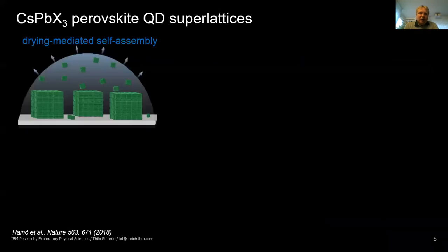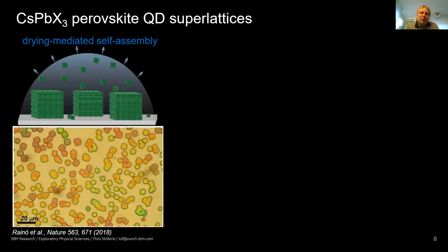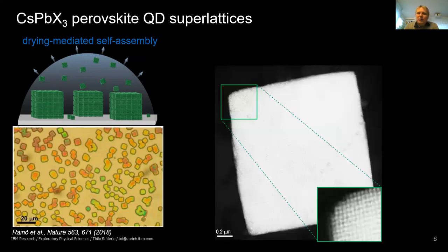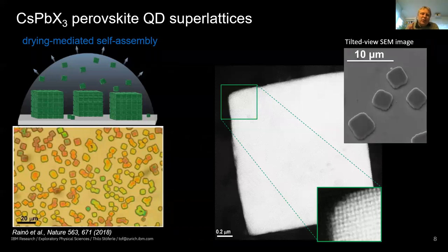Taking these nice single quantum dots and assembling many of them into so-called superlattices — essentially crystals made out of nanocrystals — is the next step. You let a solution of nanocrystals slowly dry, and if conditions are right they assemble into supercubes reaching dimensions up to several micrometers. Under transmission electron microscopy you can see that individual nanocrystals remain inside. They are not perfectly cuboid but have a cuboidal shape, and remarkably inherit the symmetry of their individual constituents.